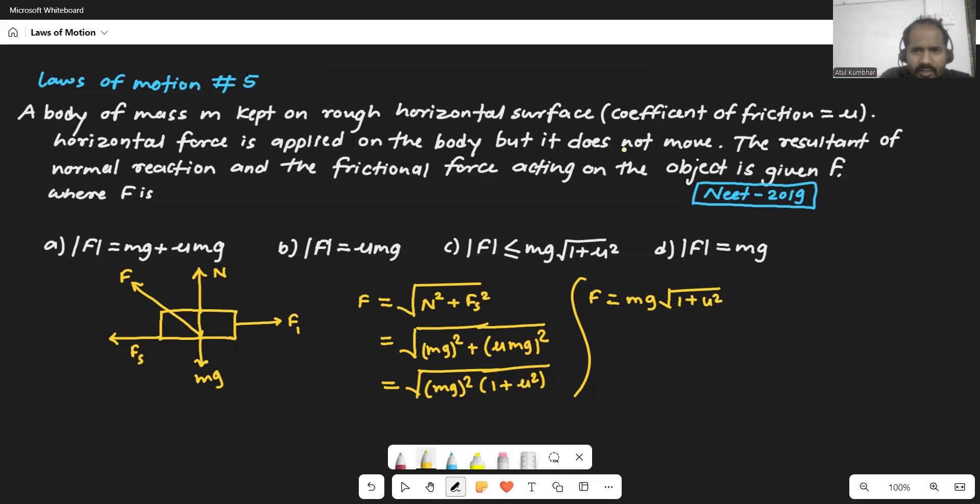As that object does not move, this means obviously the frictional force is less than or equal to the applied force. The resultant force is less than or equal to. If this is more than, obviously the object would move in this direction. So object is not moving. So this is less than or equal. So I think that should be less than or equal to mg root of 1 plus mu squared.